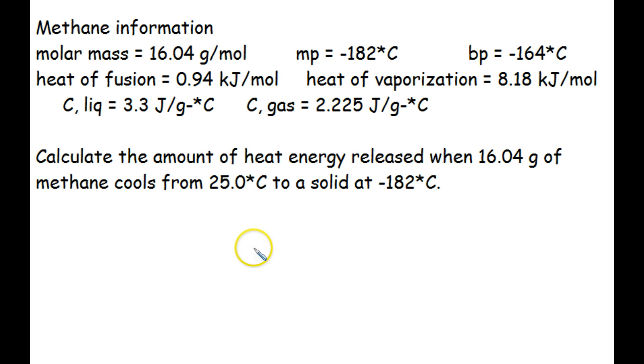In the previous video we looked at a heating curve. This time we're going to look at a cooling curve using methane, and you've got all of your required information there at the top: molar mass, melting point, boiling point, heat of fusion and vaporization, and the specific heat capacities for the liquid and gaseous phases. We're going to look at 16.04 grams of methane as it cools down from 25 degrees Celsius to a solid at negative 182 degrees Celsius.